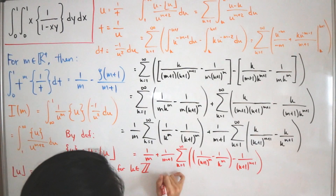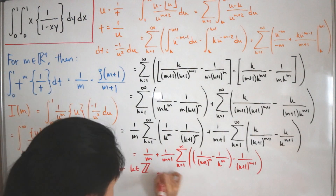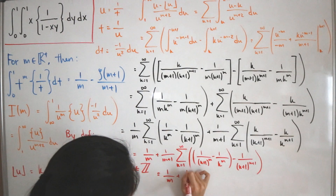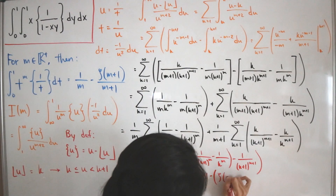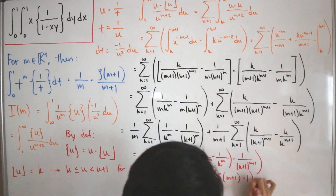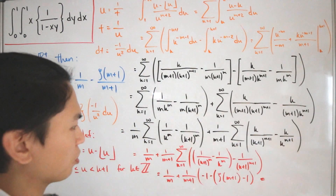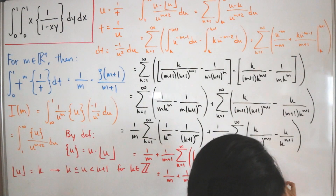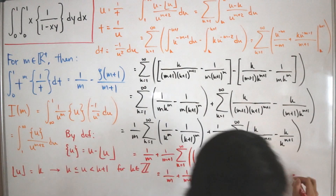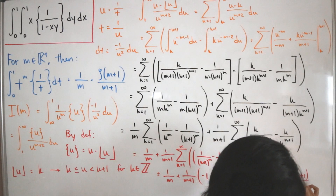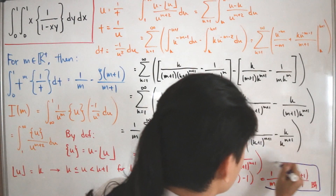Putting everything back together: we have 1/m, plus 1/(m+1) times [-1 minus (ζ(m+1) - 1)]. After simplification, the 1's cancel and we get 1/m minus ζ(m+1)/(m+1), which concludes the proof of our helper result: the integral from 0 to 1 of t^m times {1/t} dt = 1/m - ζ(m+1)/(m+1).